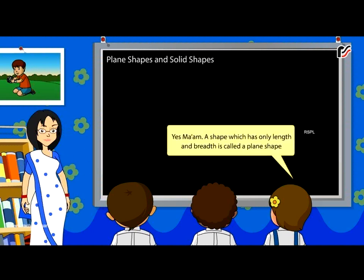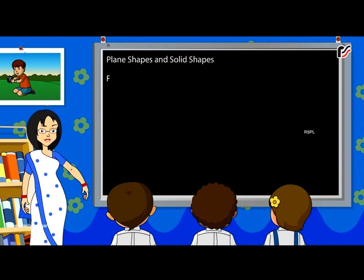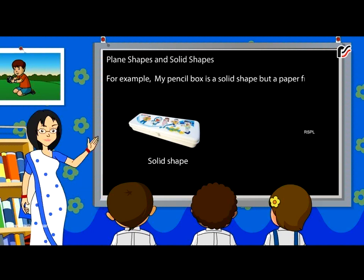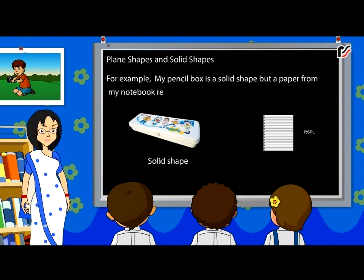Yes, ma'am. A shape which has only length and breadth is called a plane shape. And a shape which has length, breadth and height is called a solid shape. For example, my pencil box is a solid shape but a paper from my notebook represents a plane shape.